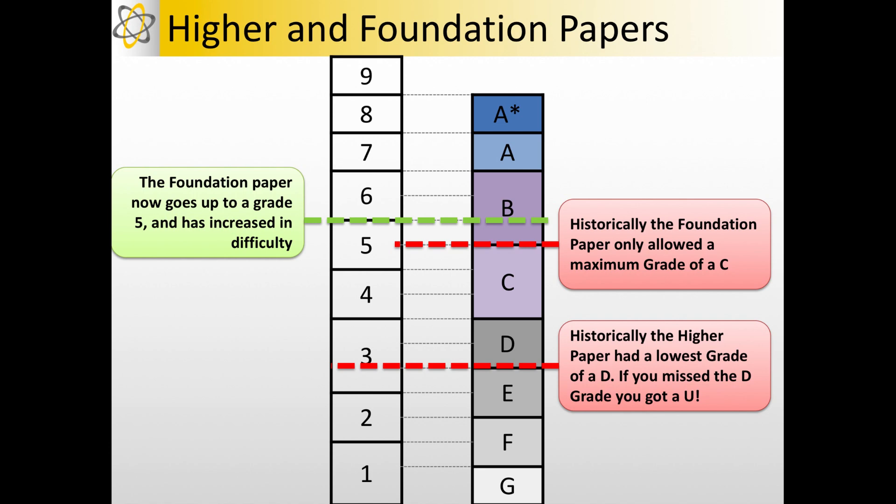The lowest you can now get on a Higher paper is a Grade 4. So if you drop below that Grade 4, you don't meet the standard to get the Grade 4, then you would get a U and it would be two U's because it's two grades in combined science or in the individual science.